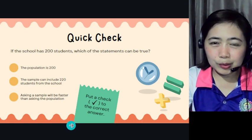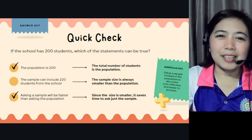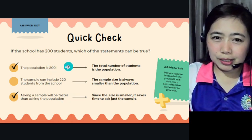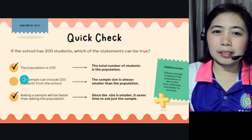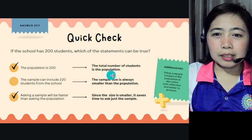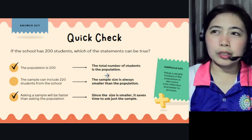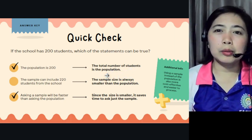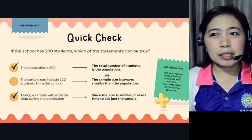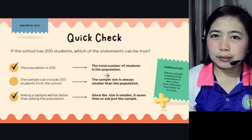You can think of your answer. Here are the answers. Which one is true? Both of these: the population is 200 — why? Because the total number of students is the population. The school is big, so you can't get data from all of them, so you take a portion and focus, for example, on Grade 11 students at a specific school.